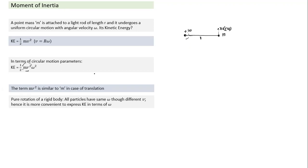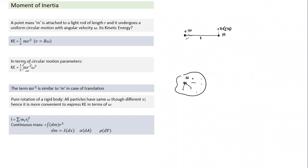For a rigid body undergoing rotation, it is composed of several particles. All particles have different velocities, making kinetic energy in terms of v complex. But in rotation, every single particle has the same omega. So it makes more sense to write kinetic energy in terms of omega, requiring the term we define as moment of inertia.